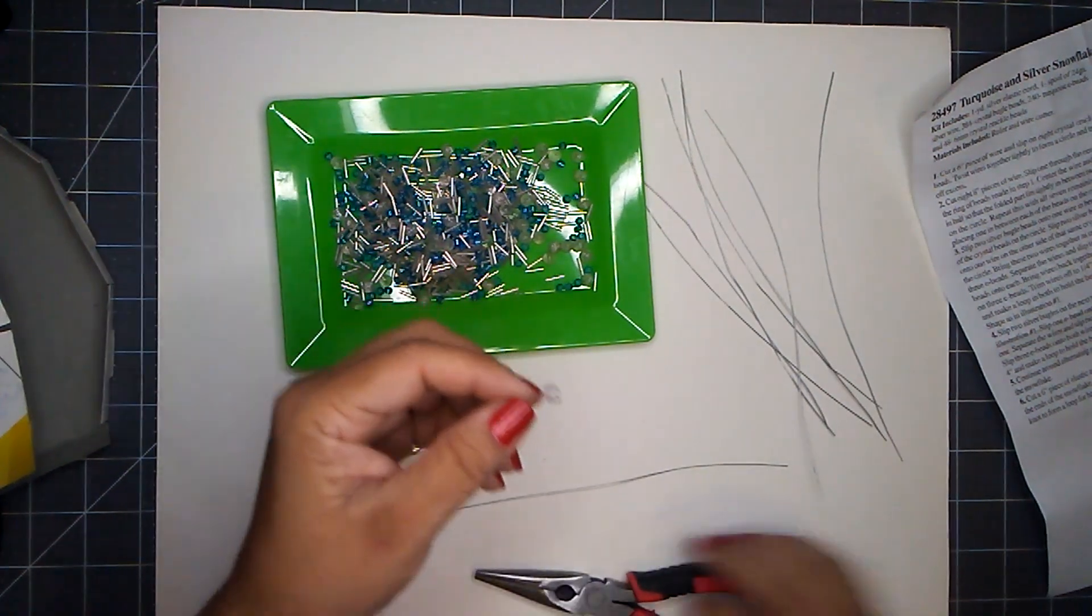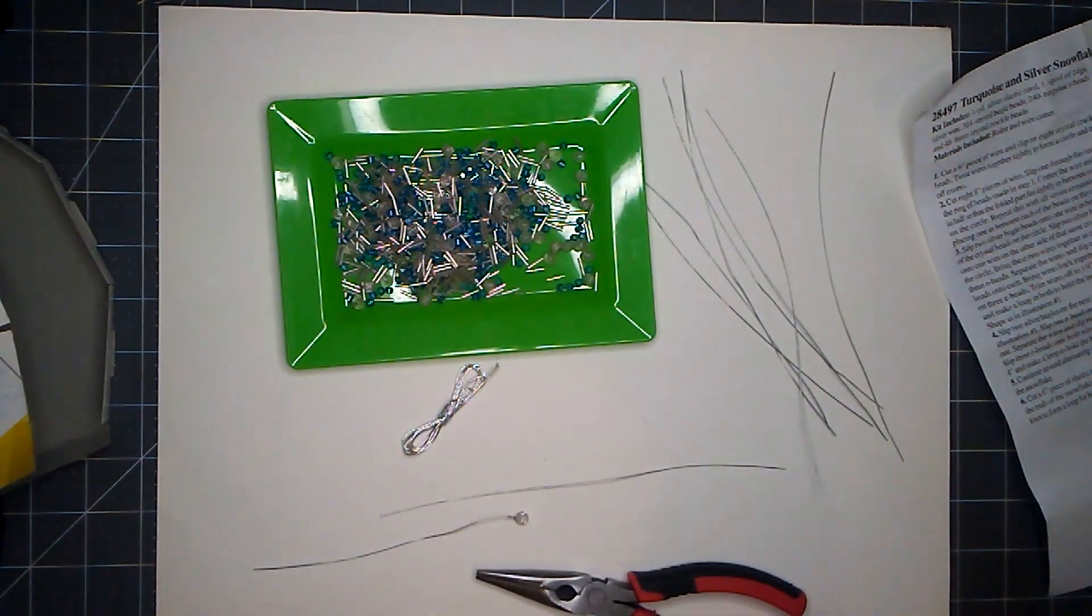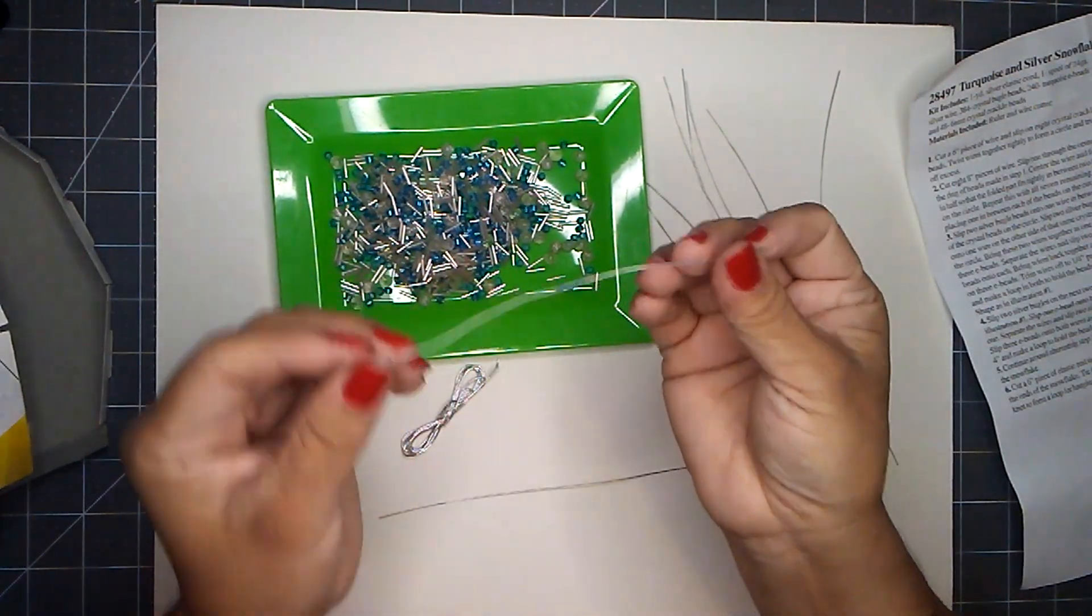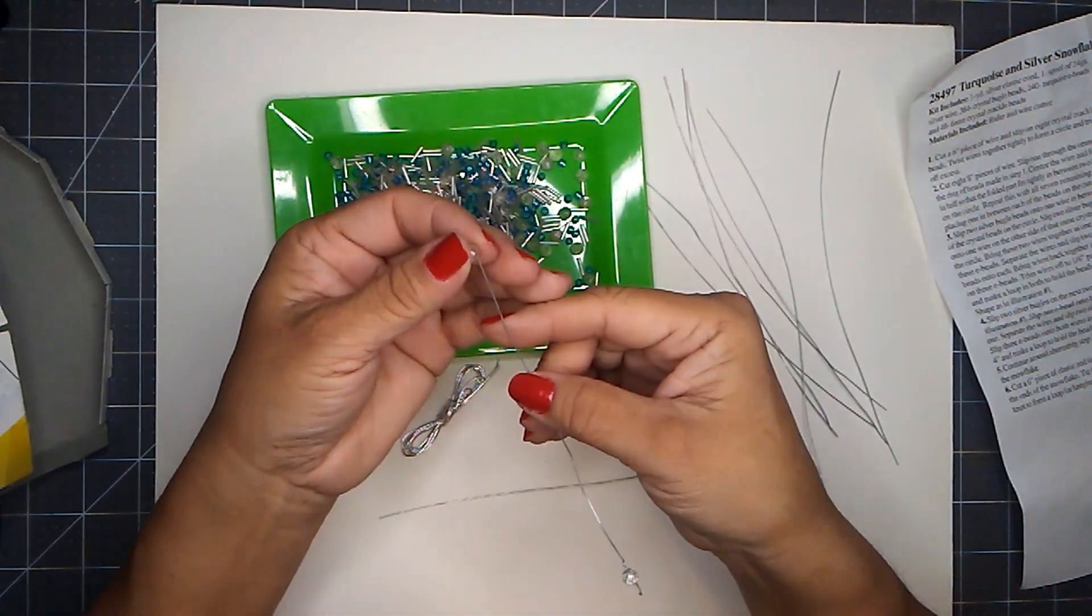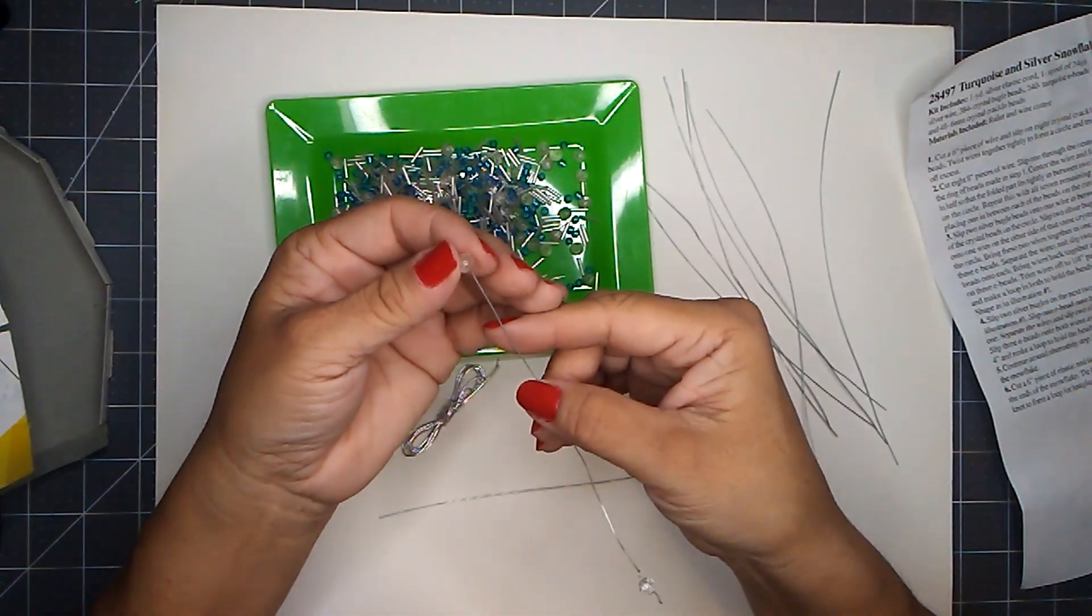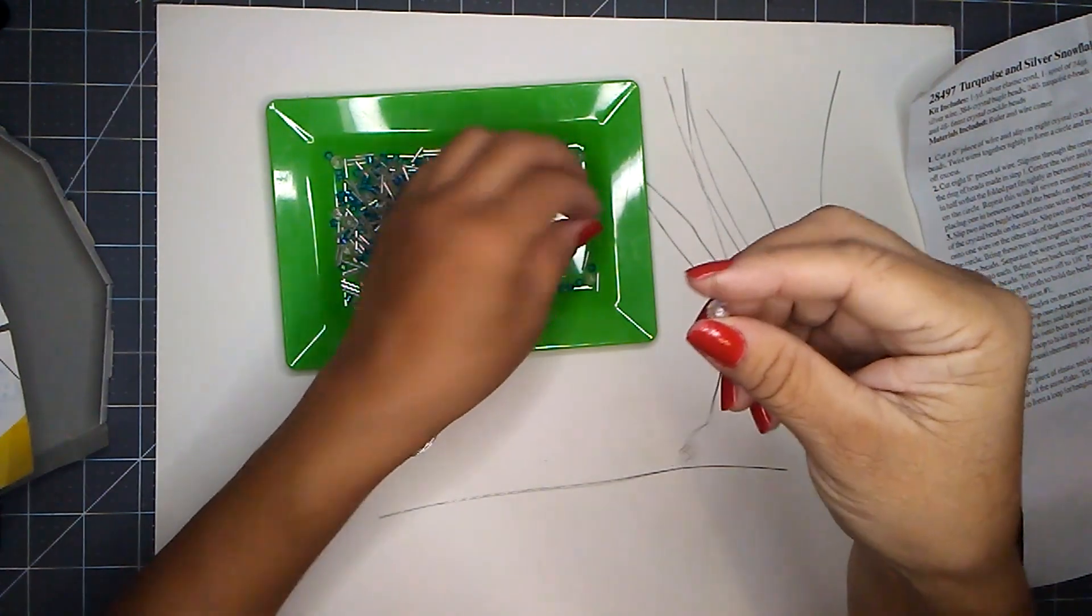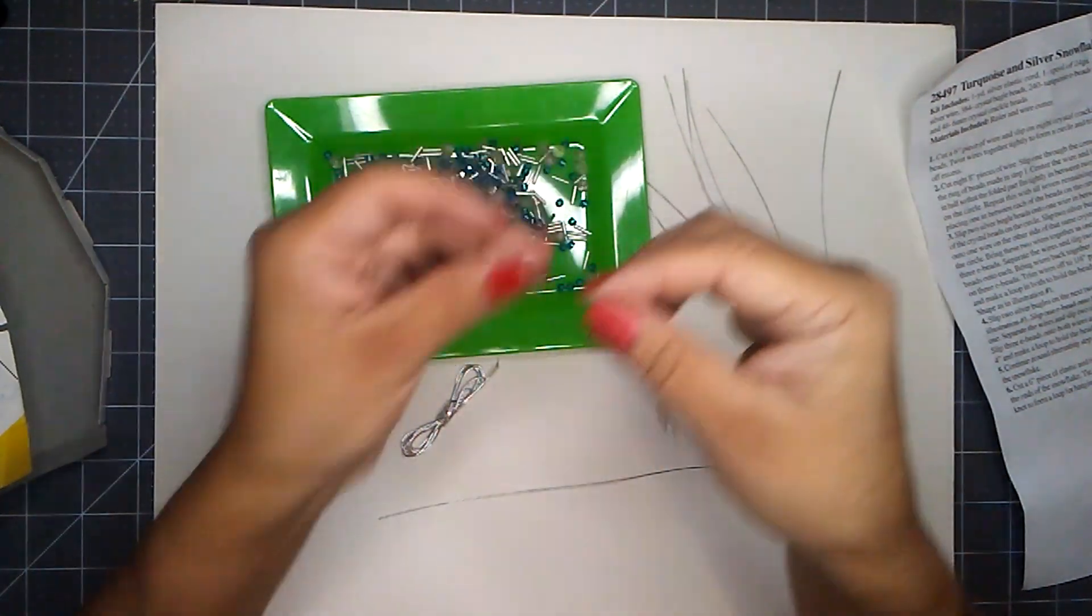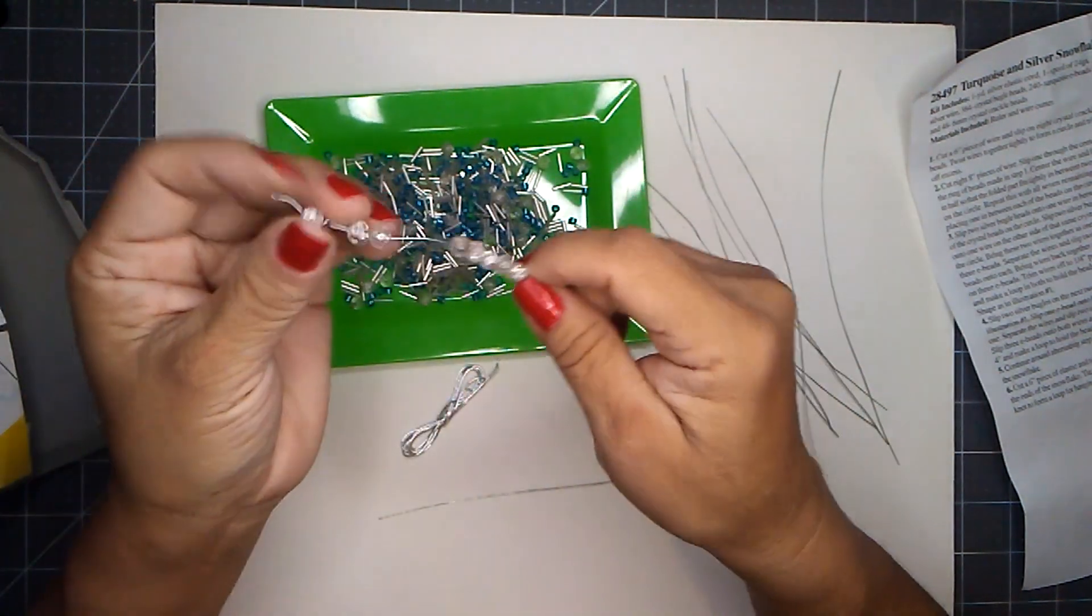This is wrong. Let's go back to step one. So it says number one, cut a six inch piece of wire, slip on eight of these little beads. There we go. And now I have eight crackle beads.